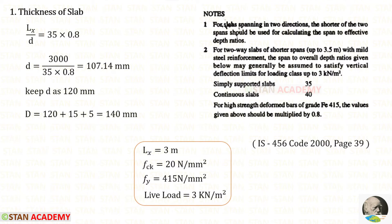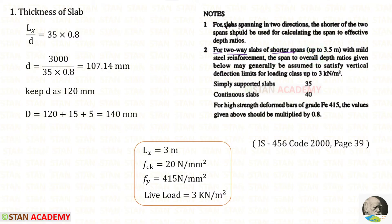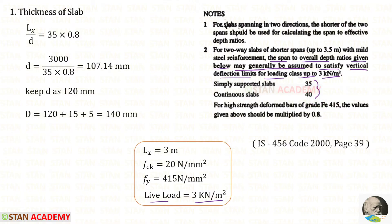Now we are going to find the thickness of the slab. From IS 456 page number 39, for slabs spanning in two directions, the shorter of the two spans should be used for calculating the span-to-effective-depth ratio. The short span is 3 meter. For two-way slabs of shorter spans up to 3.5 meter — our shorter span is 3 meter, less than 3.5 meter — the span-to-overall-depth ratios given may be assumed to satisfy vertical deflection limits for loading class up to 3 kN/m². Our live load is 3 kN/m², so we can use these ratios. Since the slab is simply supported, the ratio is 35.